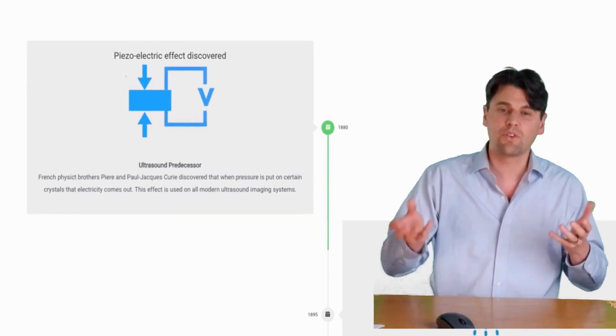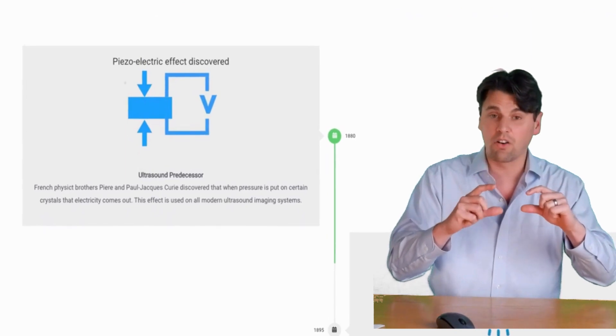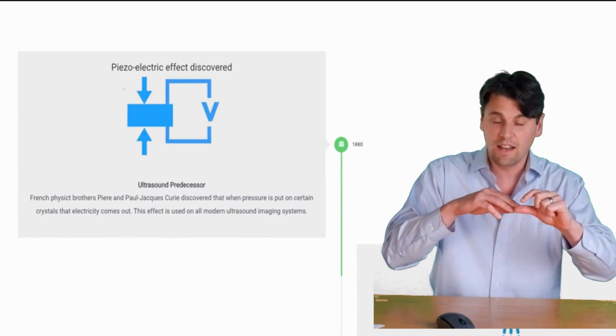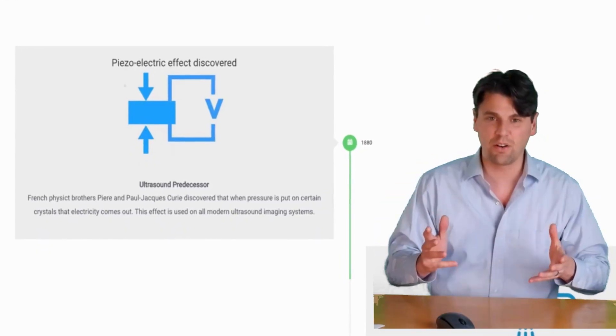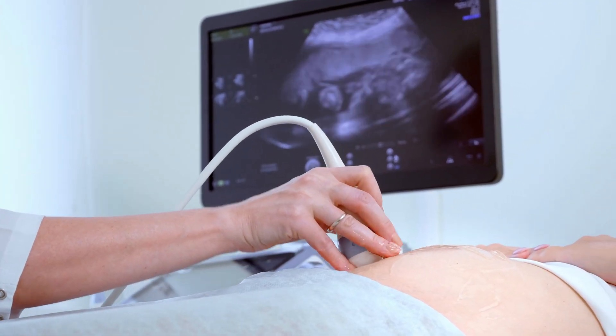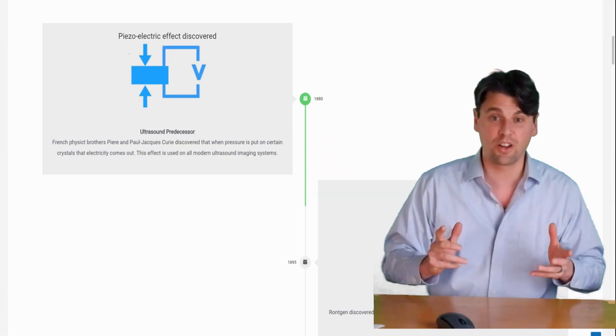If you turn it around and do the opposite, applying a voltage across that crystal, you can actually generate a pressure wave coming out from that crystal. With the same piezoelectric crystal, you can both send the wave, it will then reflect in the tissue, and then you can sense it as well. The discovery was made by Pierre Curie.